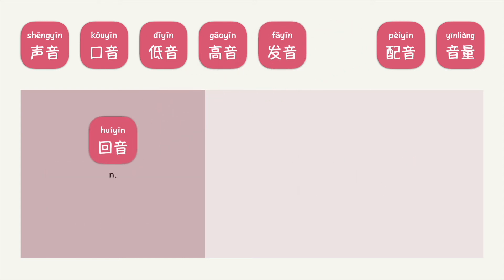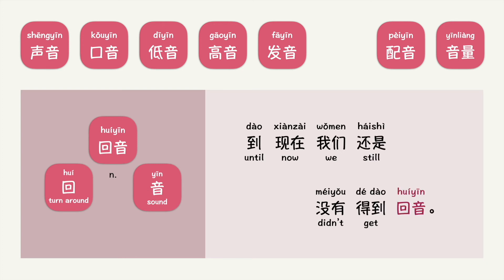回音. 回音 is a noun. 回 means turn around, 音 means sound. Put into context, you can say: 到现在我们还是没有得到回音。 Sound that turns around — what do you think 回音 means? 回音 can refer to echo, but it also means a reply. This example uses 回音 as a reply.